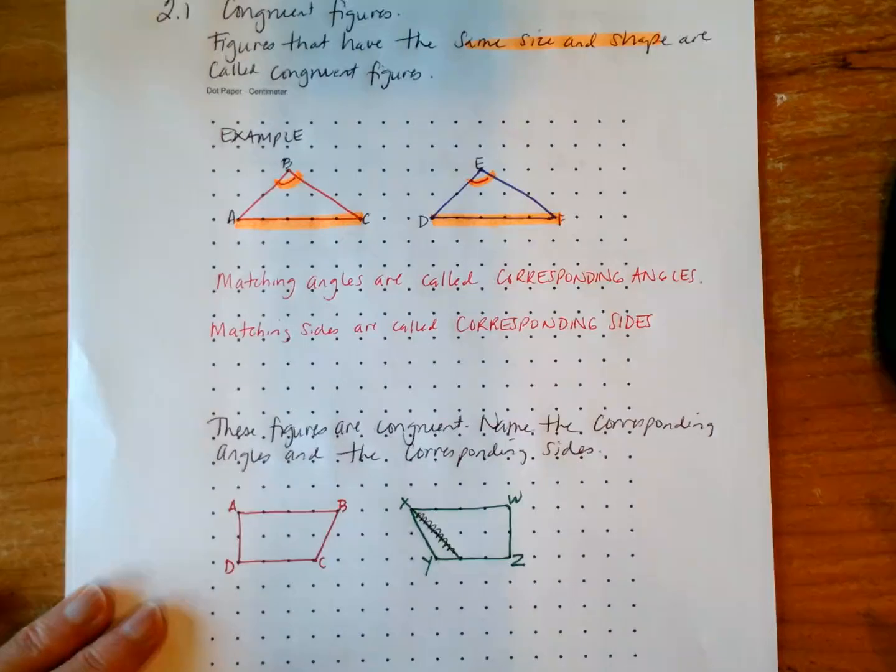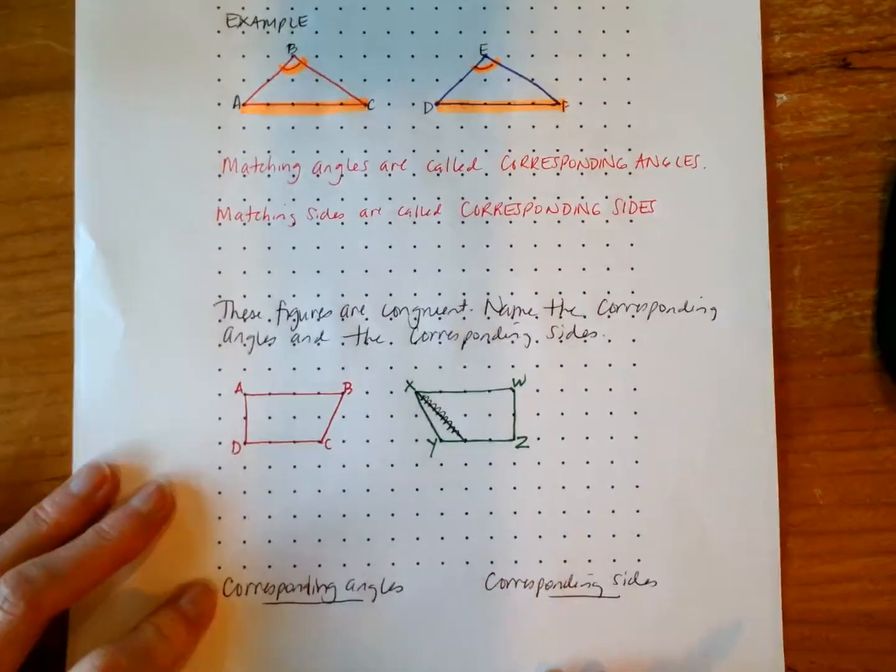If you are going to have a shape that is the same size and shape, they would have corresponding angles and corresponding sides. If any one of them were different, the shape would no longer be the same.